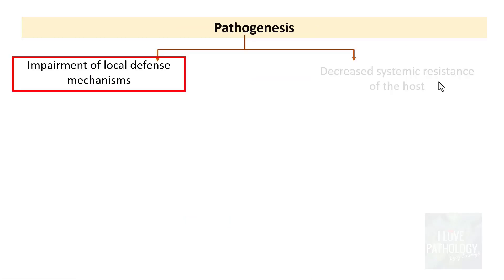In immunocompromised individuals, impairment of defense mechanisms means any organism can be implicated, including the usual organisms plus cytomegalovirus, Mycobacterium avium-intracellulare complex, and various fungal infections. Fungal pathogens include Pneumocystis jirovecii, Aspergillus, Candida, Mucormycosis, Histoplasmosis, Cryptococcosis, Coccidioidomycosis, and Blastomycosis.